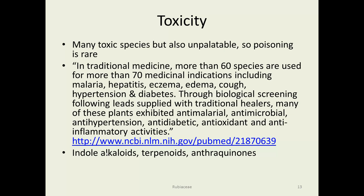Many species are toxic, but there's not much poisoning because they're so bitter that even hungry animals don't want to eat them. A quote from the National Institutes of Health: in traditional medicine, more than 60 species in this family are used in more than 70 medicinal indications — including everything from malaria to coughs, hypertension, and diabetes. Biological screening has been ongoing to pursue these leads, and many of these plants do indeed exhibit anti-malarial, antimicrobial, anti-hypertension, anti-diabetic, antioxidant, and anti-inflammatory activities.